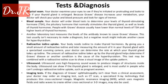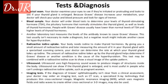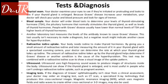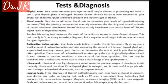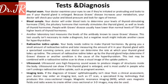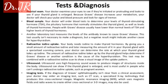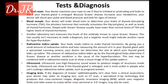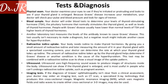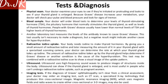For tests and diagnosis, during a physical examination your doctor checks your eyes to see if they are irritated or protruding, and looks to see if your thyroid gland is enlarged. Because Graves' disease increases your metabolism, your doctor will check your pulse and blood pressure and look for signs of tremor. Blood tests are ordered to determine your levels of thyroid-stimulating hormone (TSH) — the pituitary hormone that normally stimulates the thyroid gland — as well as levels of thyroid hormones. People with Graves' disease usually have lower than normal TSH levels and higher levels of thyroid hormones.